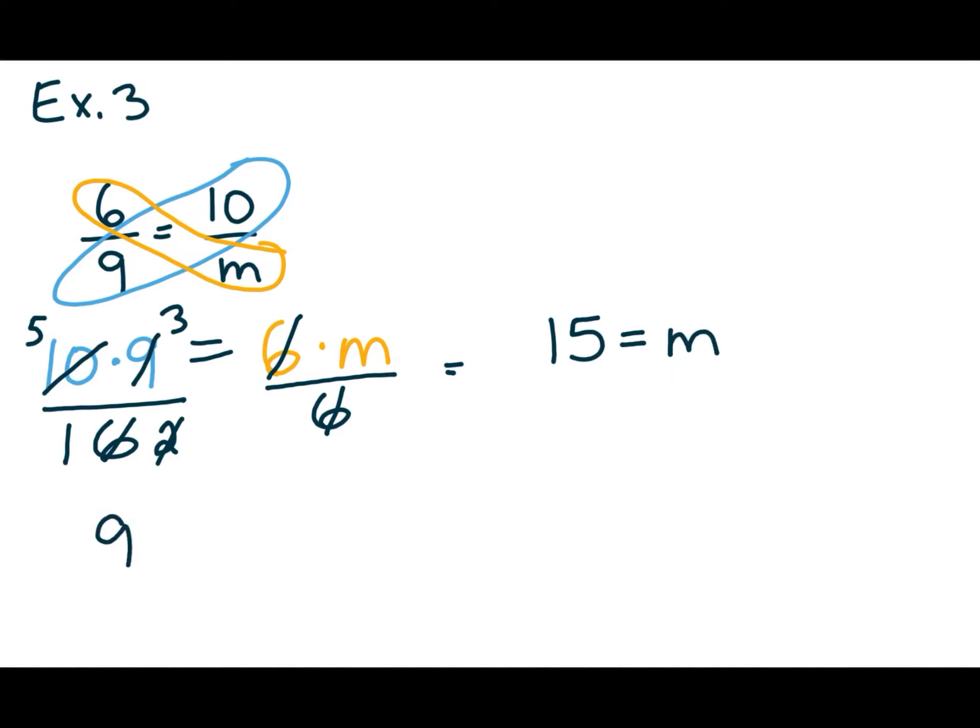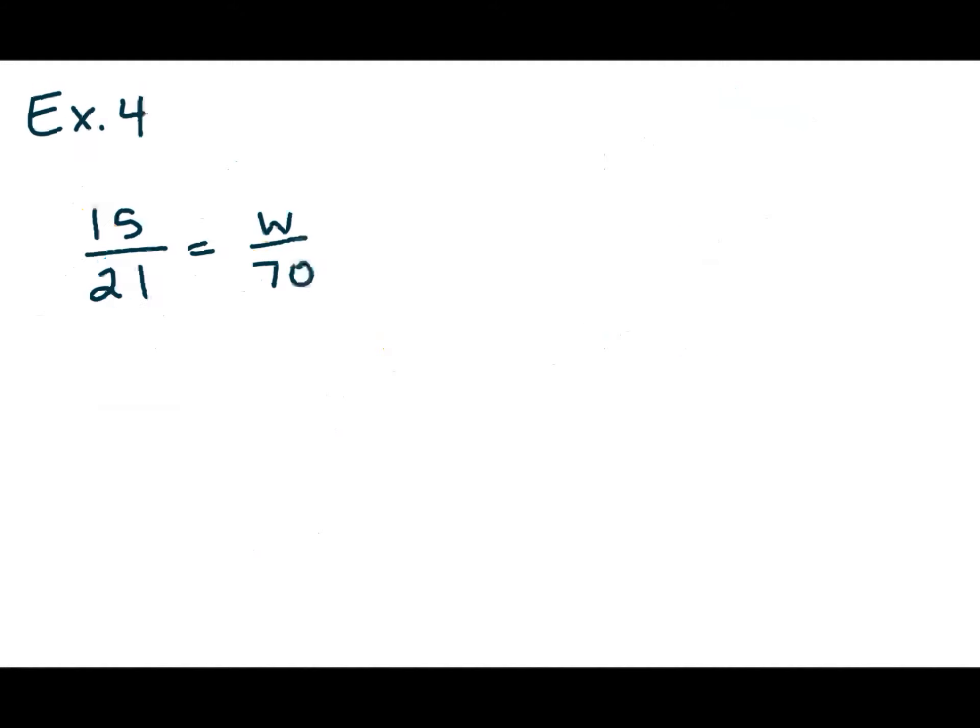Another way of doing this would be to say 90 equals 6m, and then divide 6 into 90, and I would also get 15. But I just wanted to show you the way of factoring because I'm going to use that in example 4.